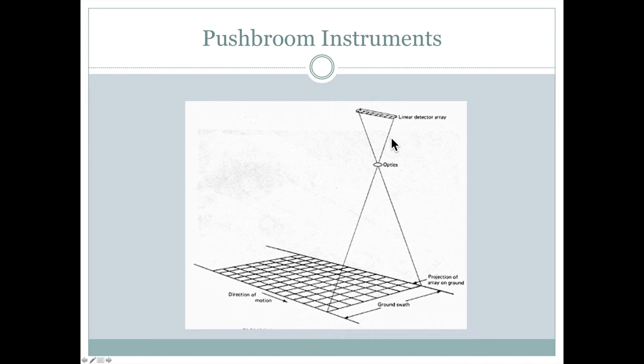Another way is this type of instrument that's called a push broom instrument. And it's called a push broom because we can imagine if the satellite is up here, it's moving in the same direction in which the information is being collected. So in this case, we have a linear array of detectors. So each one of those you can think of as like one of those little matrix arrays, perhaps. And all of that is coming through some sort of optics.